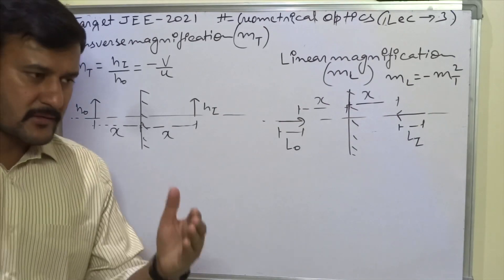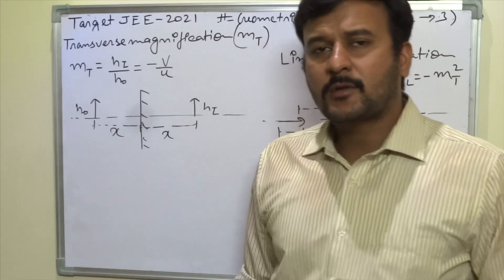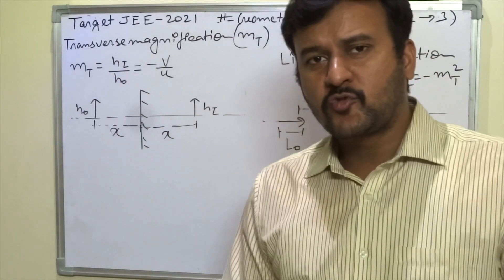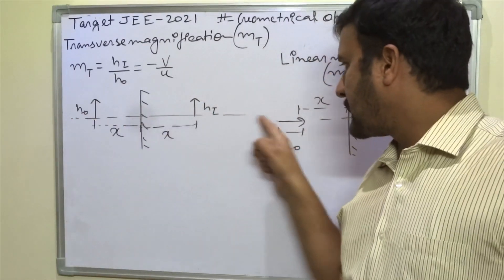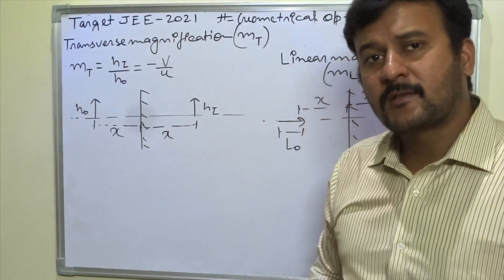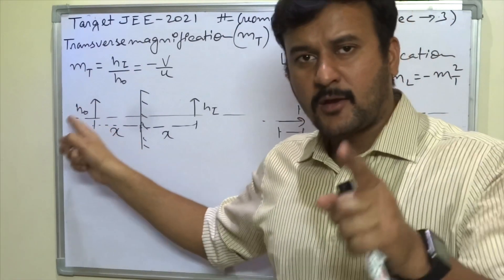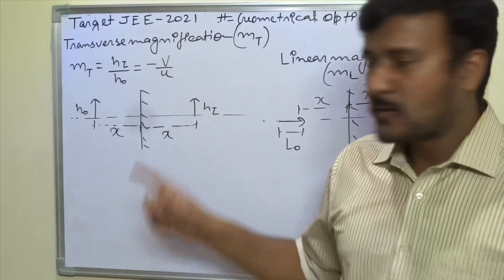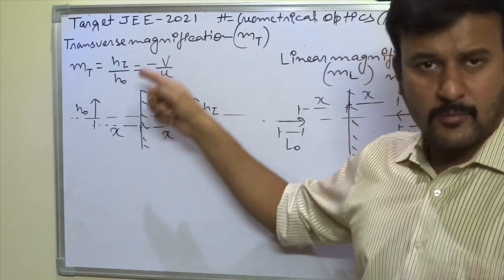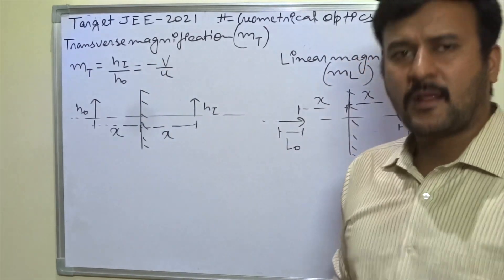Transverse magnification. Transverse means perpendicular. Now what is perpendicular? Transverse magnification is actually height of image upon height of object. This is height of object and height of image. So the ratio height of image upon height of object is known as transverse magnification. And this formula is for mirrors, whether it is a plane mirror or a spherical mirror, that is minus v upon u. And this is a derivation in spherical mirror.